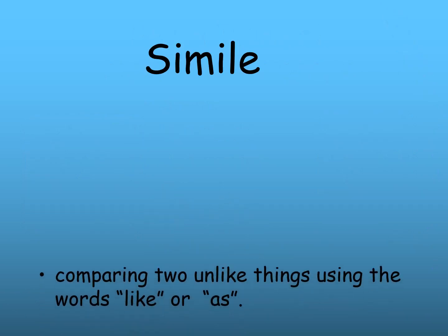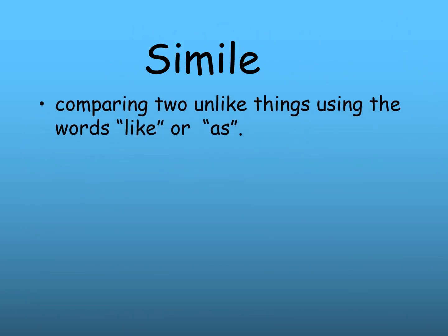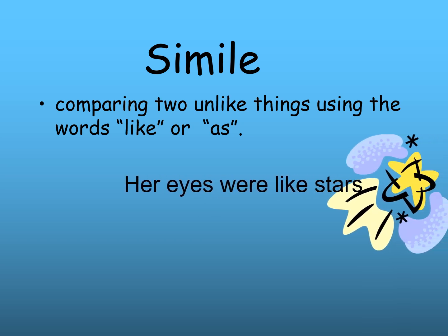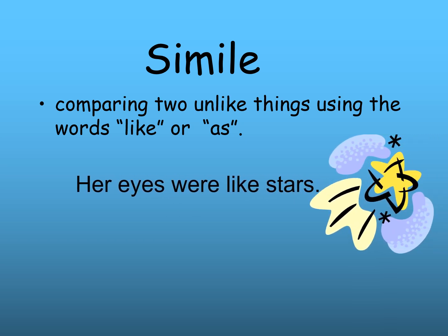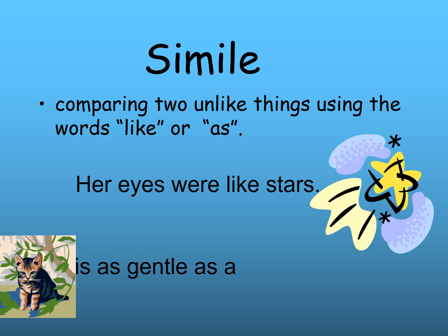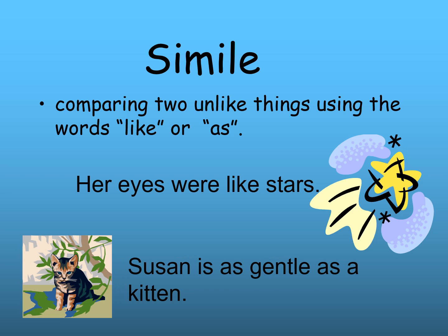Let's begin with the simile. A simile compares two unlike things using the words 'like' or 'as.' For example, 'her eyes were like stars' — the poet compares her eyes to stars using 'like.' Another example: 'Susan is as gentle as a kitten' — the poet compares Susan to a kitten using 'as.'